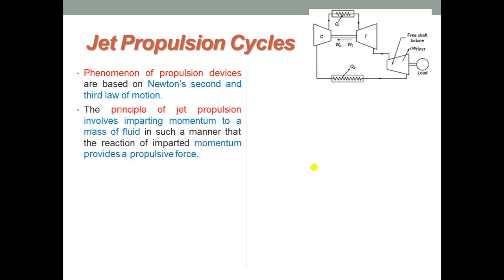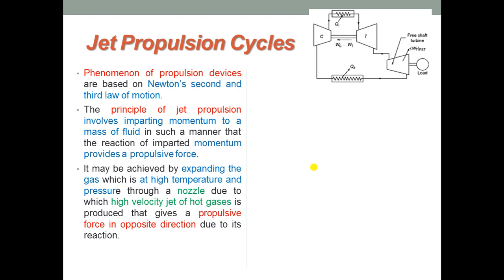The principle of jet propulsion involves imparting momentum to a mass of fluid in such a manner that the reaction of the imparted momentum provides a propulsive force which makes an object move in the required direction. This may be achieved by expanding the gas which is at high temperature and pressure through a nozzle, producing a high velocity jet of hot gases that gives a propulsive force in the opposite direction due to its reaction. For jet propulsion, the open cycle gas turbine is most suitable.